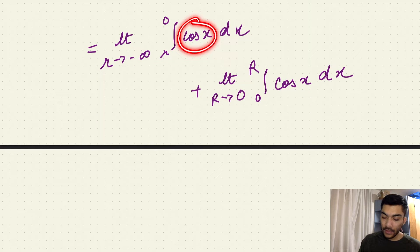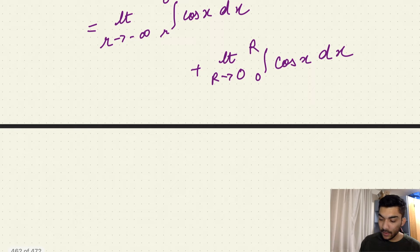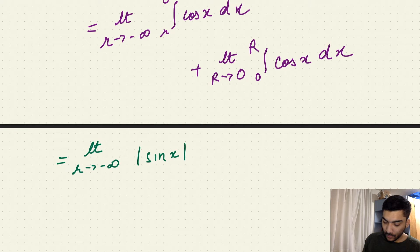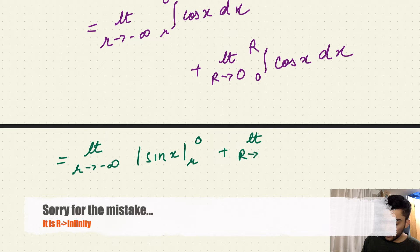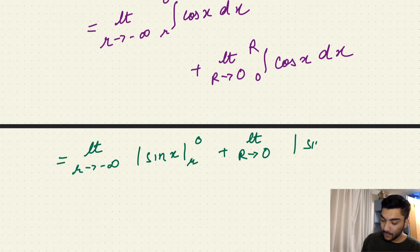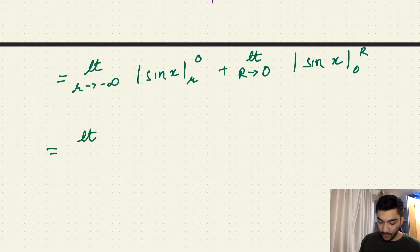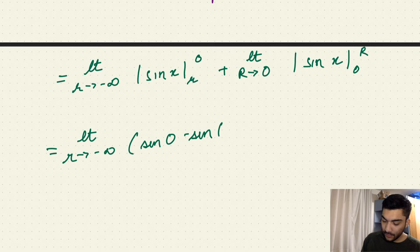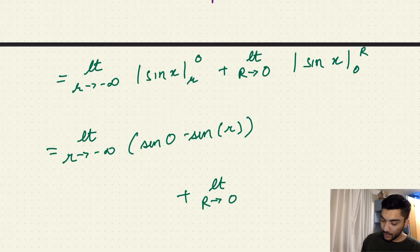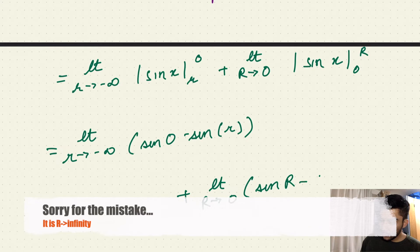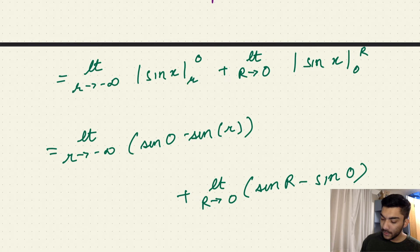We know that the integral of cos x is sine x. So the expression becomes: limit as small r approaches minus infinity of sine x evaluated from r to zero, plus limit as capital R approaches infinity of sine x evaluated from zero to capital R. Solving this, the first limit is the limit as r tends to minus infinity of sine(0) minus sine(r), and the second limit is the limit as R approaches infinity of sine(R) minus sine(0).